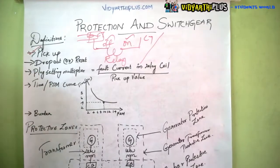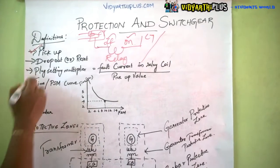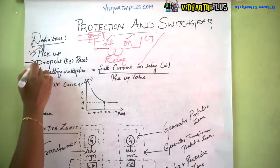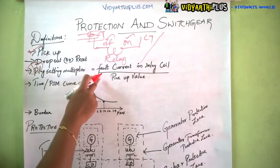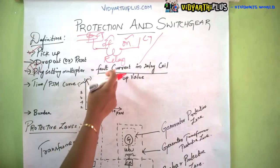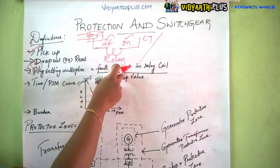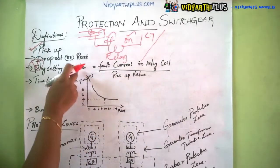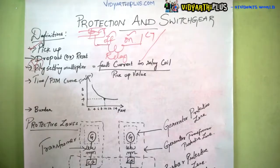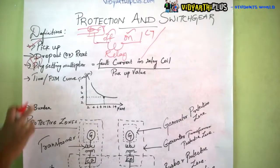Next is the plug setting multiplier (PSM), which is a very important term. The plug setting multiplier is given by the ratio of the fault current in the relay coil to the pick up value.